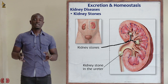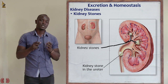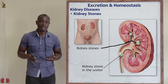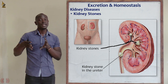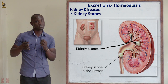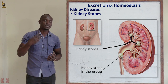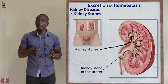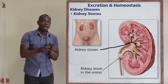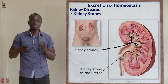The next disease is kidney stones. Kidney stones are solid deposits of calcium and other salts inside the kidney nephrons. These stones might become large enough to block the pelvis. They are usually formed in the pelvis of the kidney, where they may obstruct the flow of urine. The major impact of kidney stones occurs at the pelvis of the kidney.